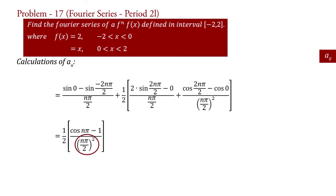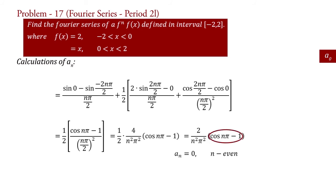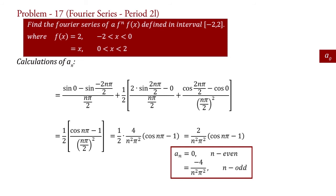Now, if we take n equal to even, then cos(n pi) equal to 1, and therefore cos(n pi) minus 1 equal to 0. Therefore an equal to 0 for n even. And if we take n equal to odd, then cos(n pi) equal to minus 1, and therefore cos(n pi) minus 1 equal to minus 2. Therefore an equal to minus 4 upon (n squared pi squared) for n odd. This is the value of an.